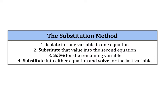The substitution method essentially works like this: you're going to start by isolating one variable, and then substitute that value into the other equation. This gives you an equation with one variable. Solve for that remaining variable, then substitute it back into either of your original equations and solve for your last variable.